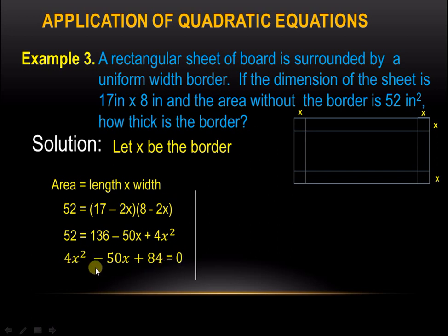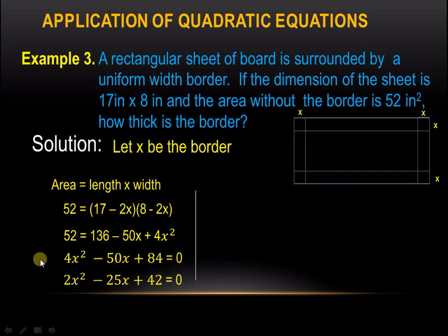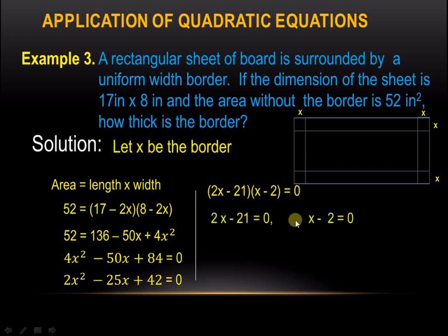We can further reduce this by dividing by 2, giving us 2x squared minus 25x plus 42 equals 0. Factoring this out, the factors are (2x minus 21)(x minus 2) equals 0. Equating both factors to 0, we get two new equations.